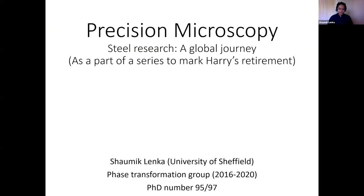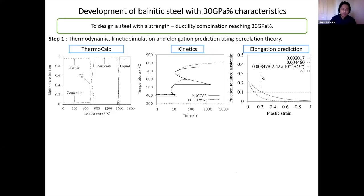I have been a part of the phase transformation group from 2016 to 2020. That was the time when I was doing my PhD — I was PhD number 95 out of his 97 PhD students. My work was to develop a bainitic steel with 30 GPa% characteristics. 30 GPa% means you multiply the strength and ductility — that strength combination should reach around 30 GPa%.